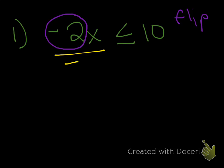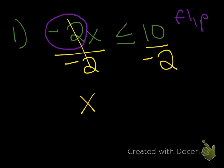We're going to divide both sides by negative 2. These cancel and I'm left with x, and 10 divided by negative 2 is negative 5. If you multiply a number by negative 1 and get the opposite, it makes sense that the inequality sign also goes to the opposite — it switches. So this would be greater than or equal to. If you have a negative coefficient that you're multiplying or dividing by, you have to flip the sign.